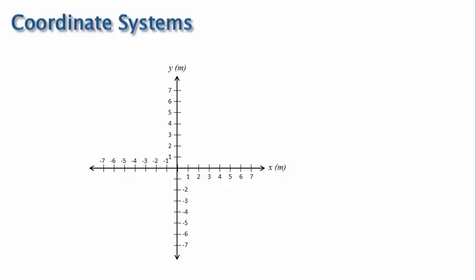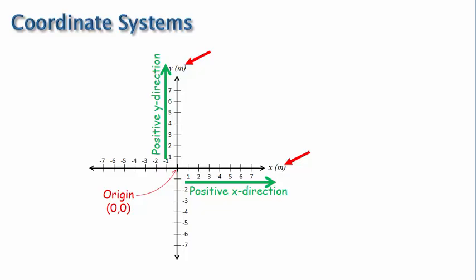Notice the units for each axis are defined in parentheses next to the x and y axis labels, so meters in this case. Also recognize that the positive direction for each axis is from the origin toward the axis label, and the coordinates for the origin are 0, 0. Okay, let's clear the grid and work through an example.